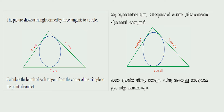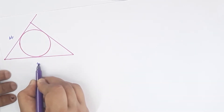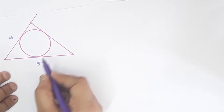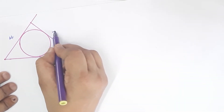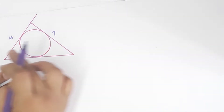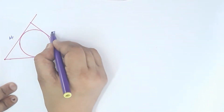The picture shows a triangle formed by three tangents to a circle. We have to calculate the length of each tangent from the corner of the triangle to the point of contact. The given side lengths are 4 cm, 5 cm, and 7 cm.